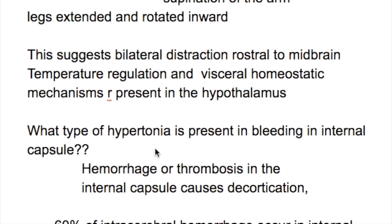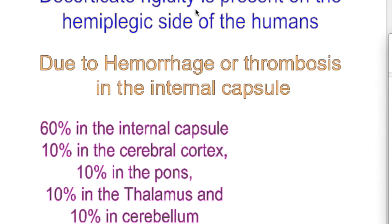What type of hypertonia is present in hemorrhage in the internal capsule? Hemorrhage or thrombosis in the internal capsule causes decortication where decorticate rigidity features are present in humans, on the hemiplegic side. The most common site of bleeding is the internal capsule, accounting for 60% of cases.